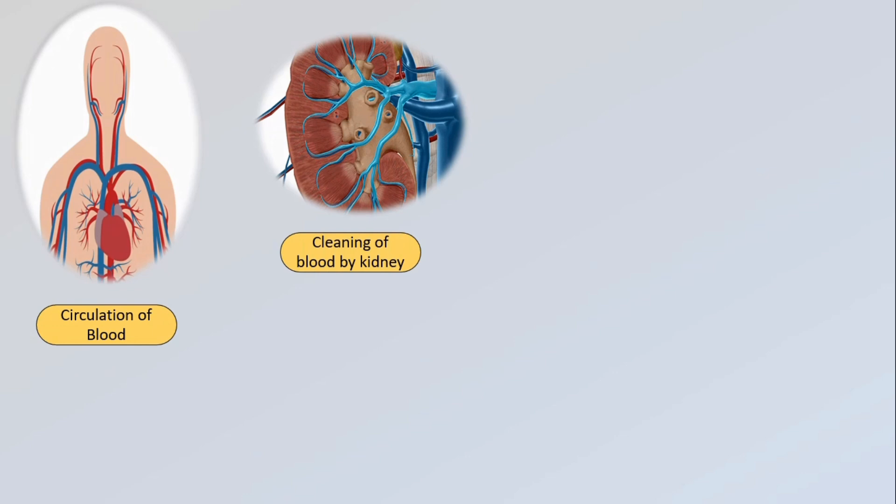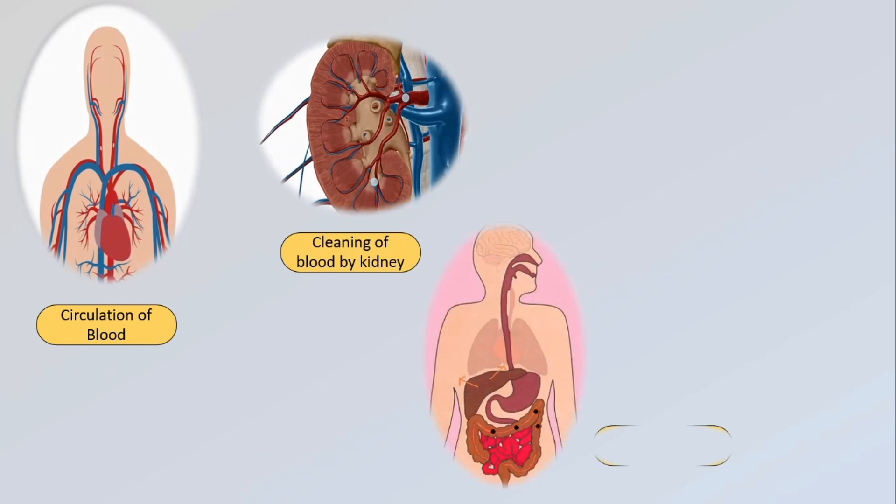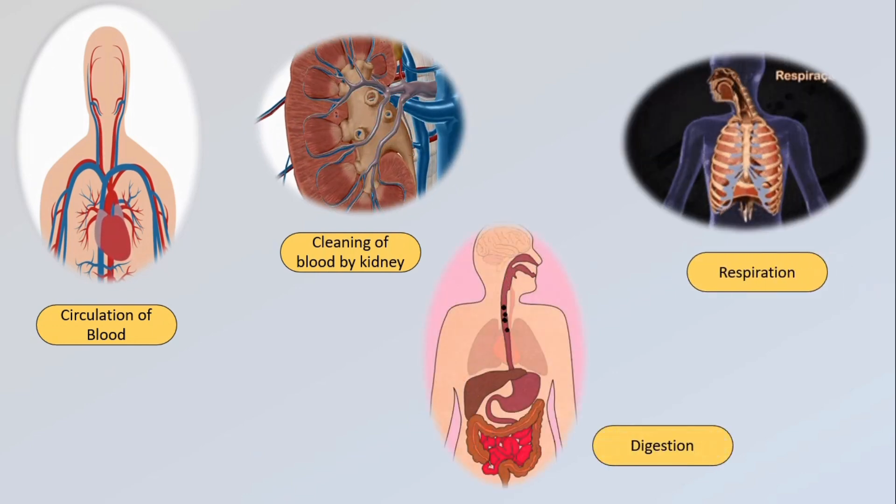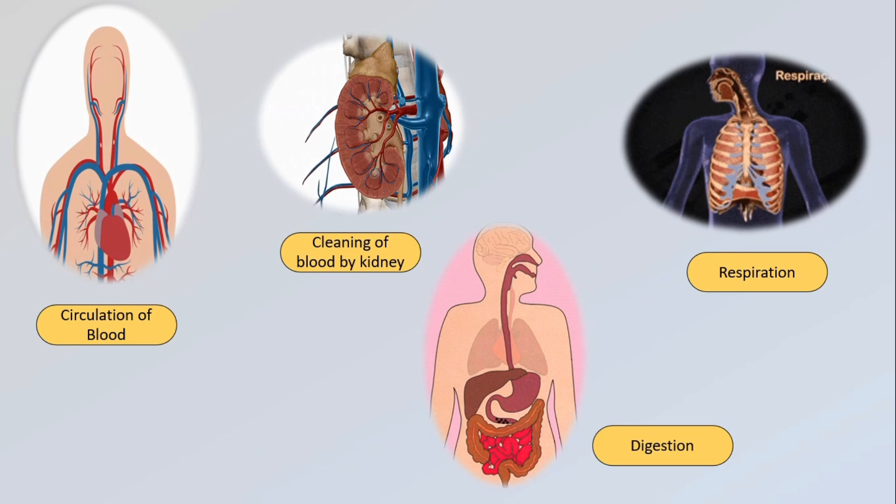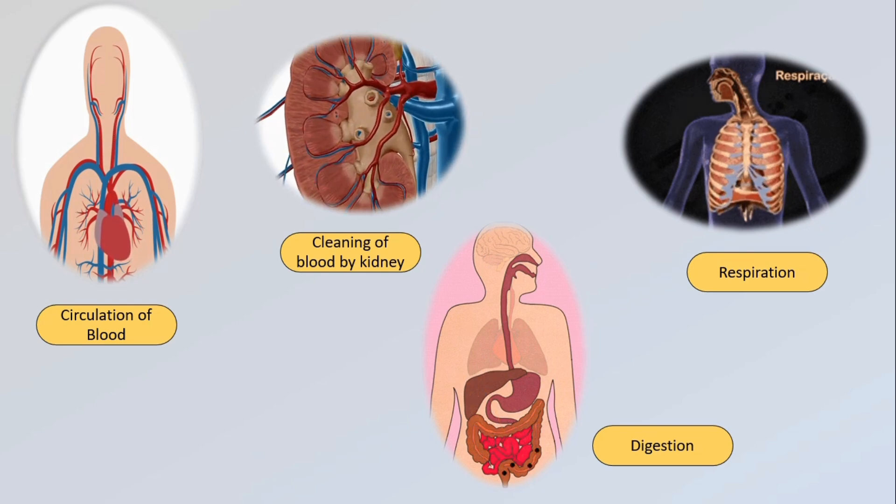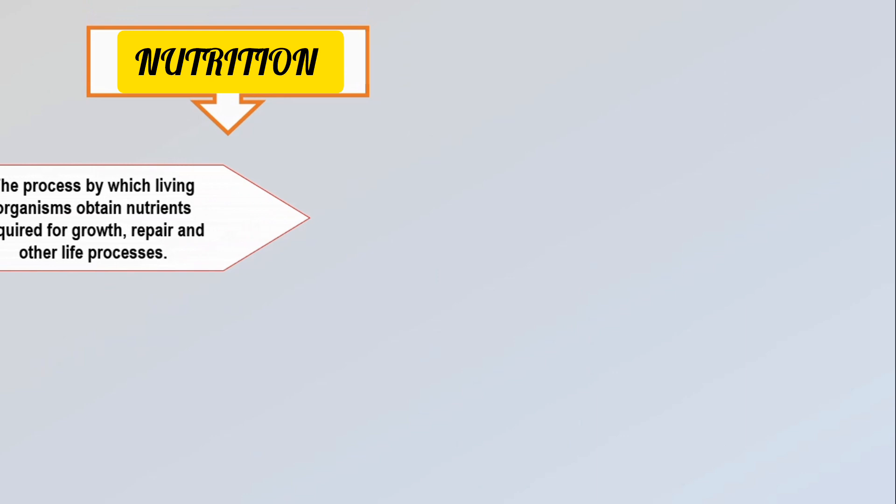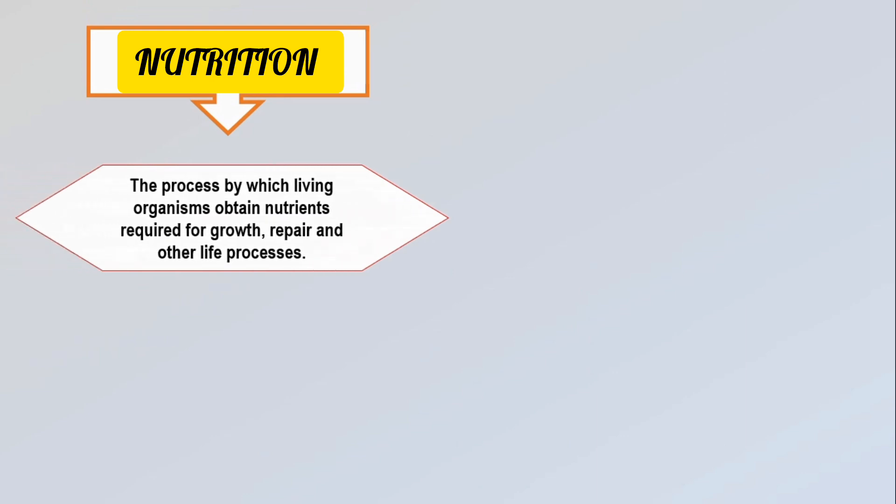Circulation of blood in the body, cleaning of blood by the kidneys, digestion of food we eat, and breathing in and breathing out air are some of the life processes that help us live. The process by which living organisms obtain nutrients required for growth, repair and other life processes is called nutrition.